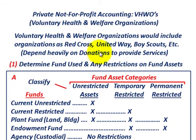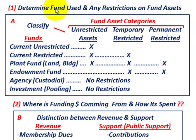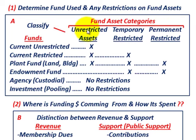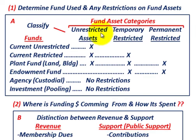When dealing with not-for-profit accounting for these voluntary health and welfare organizations, we have to start with the funds included for VHWOs. First, you have to determine the funds used and any restrictions on fund assets. Along with those funds, you have to make major classifications on your resources and assets — how they're used, and what stipulations are placed on how donations or contributions should be spent.